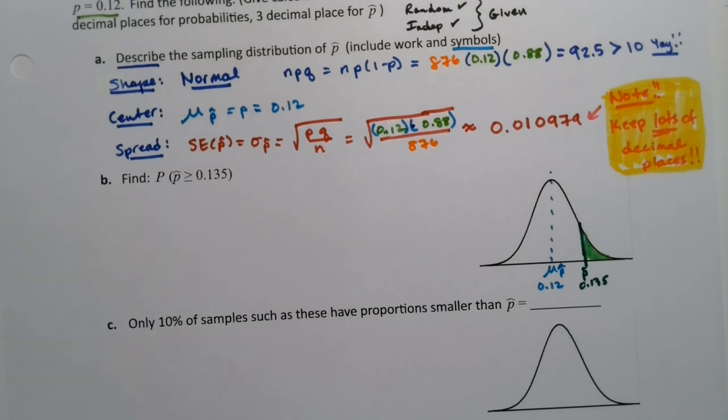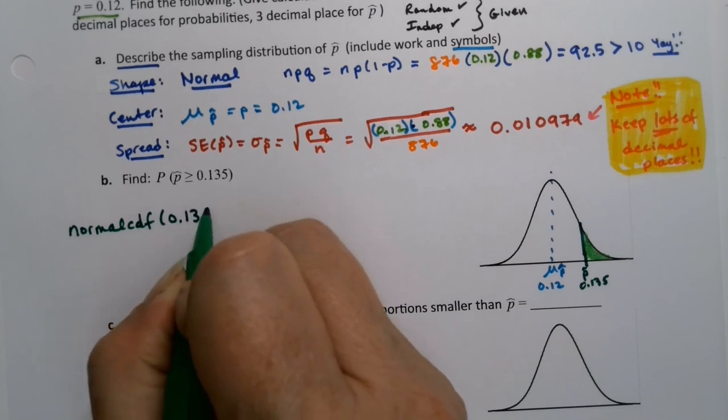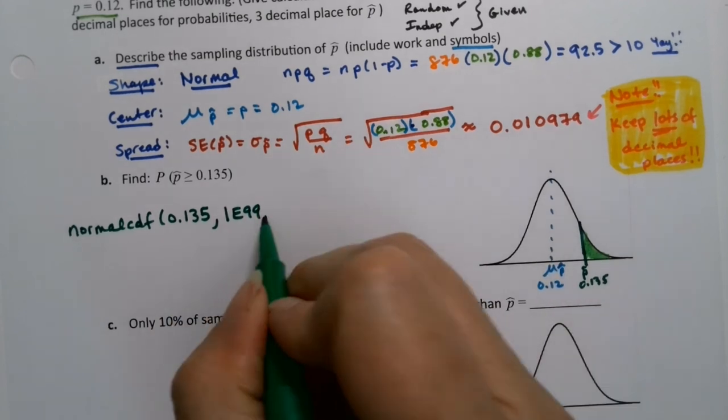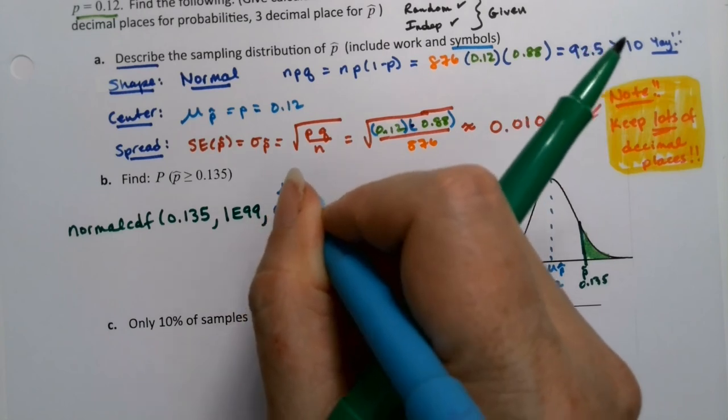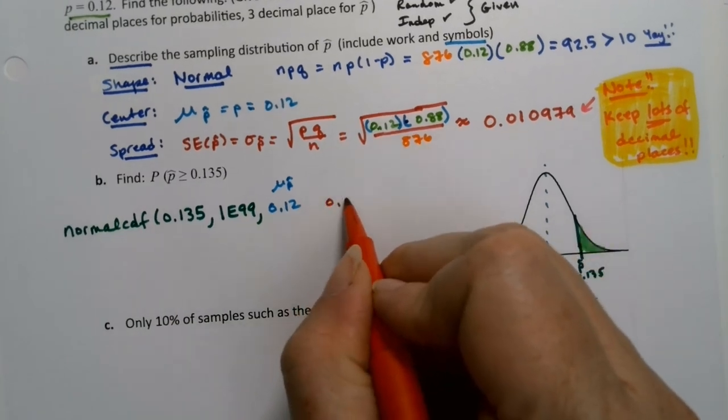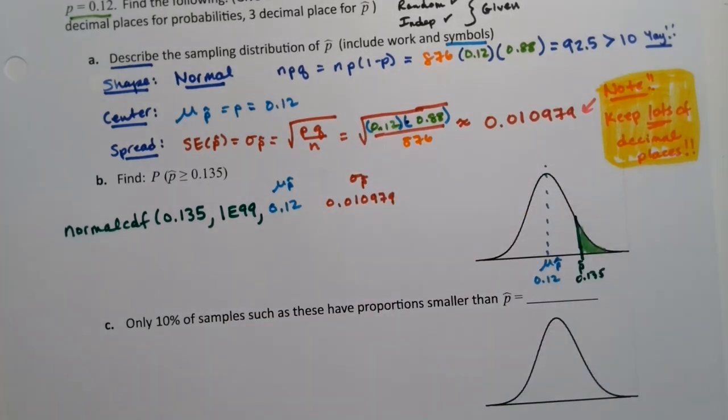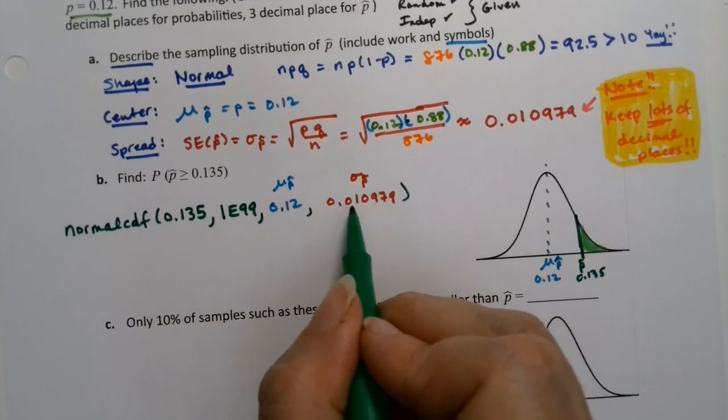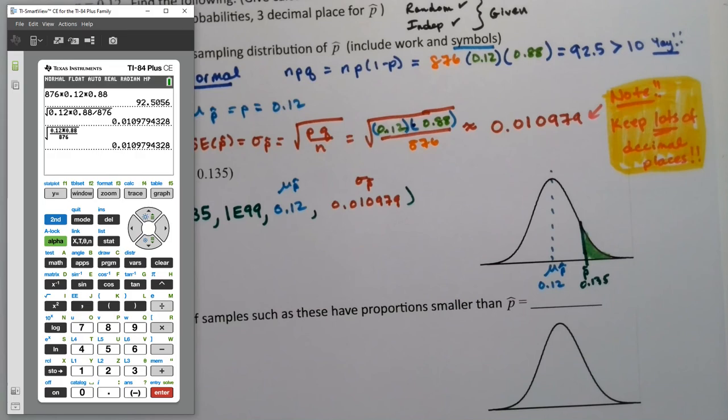So now, how do we do this? Normal CDF. 0.135 already has three decimal places—that's why you need to keep so many. And then we know it's going to be 1e99 because we're going off in that right tail. The center is the mean of the p-hats, which is 0.12, so mu sub p-hat. And then the spread—I'm not even going to bother with the square root, I'm going to put it in—so 0.010979, it's the sigma sub p-hat. And you want to keep lots of decimals because you're dealing with decimals all the way along here.